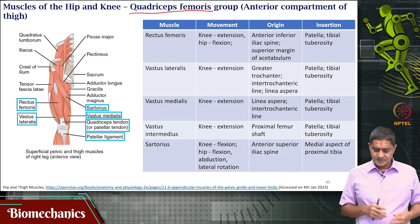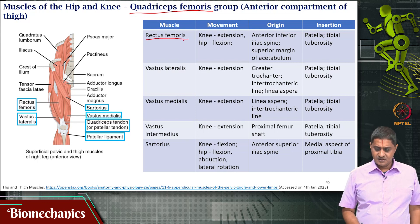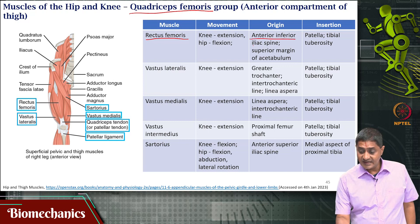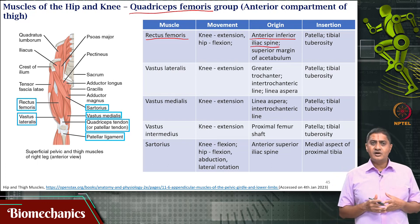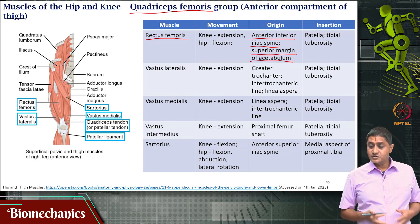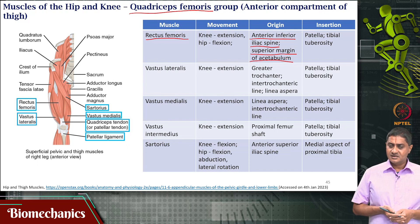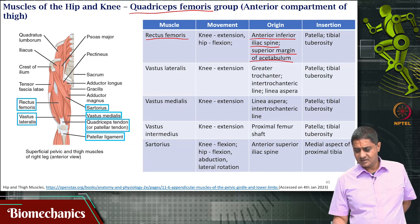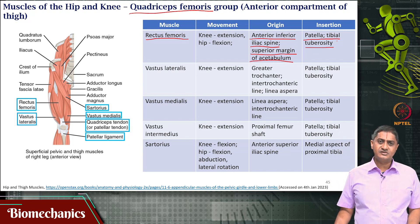These 4 muscles are: rectus femoris, originating at the anterior inferior iliac spine — one head of the origin is at the spine, and the other head is at the superior margin of the acetabulum. Its distal attachment is on the patella, which then continues on to become the patellar ligament, which then attaches to the tibial tuberosity.